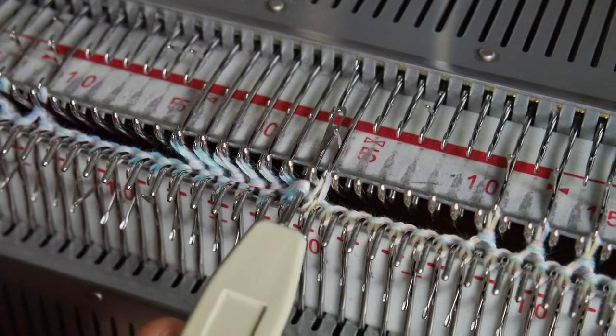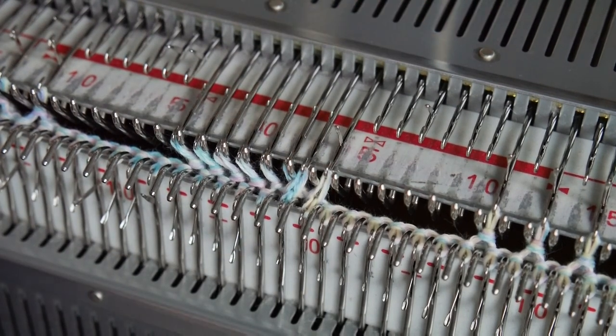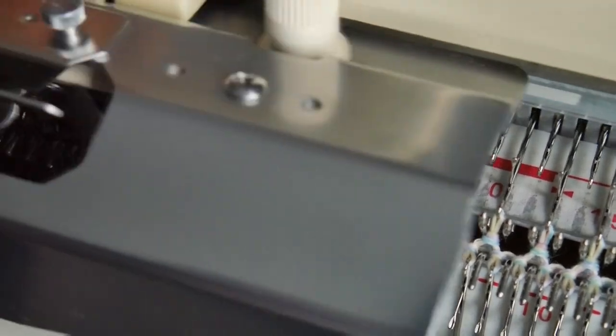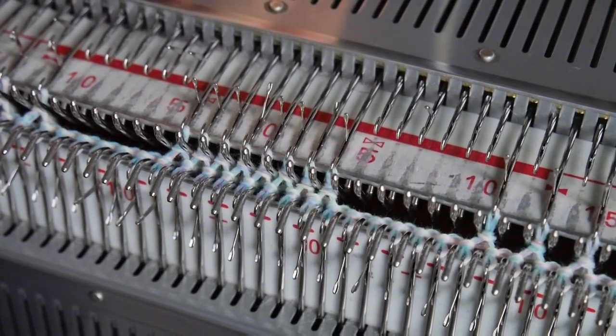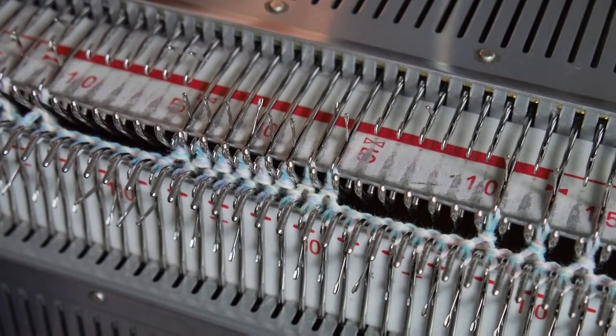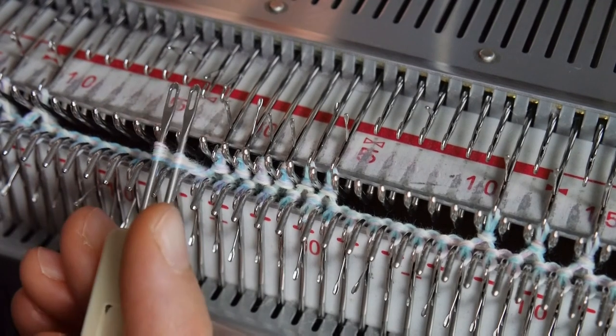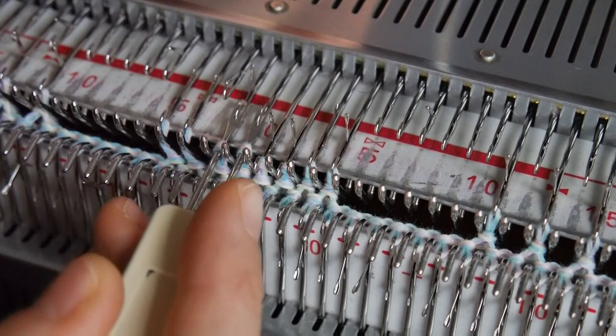Knit 2 more rows. Count from left to right this time, 6 stitches. Transfer all these 6 stitches 1 stitch to the left. Then the remaining 2 stitches 1 stitch to the right.